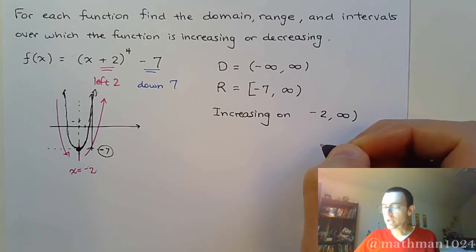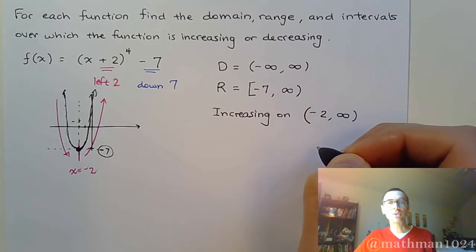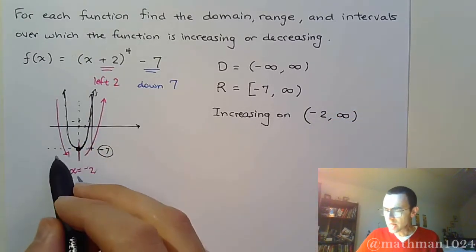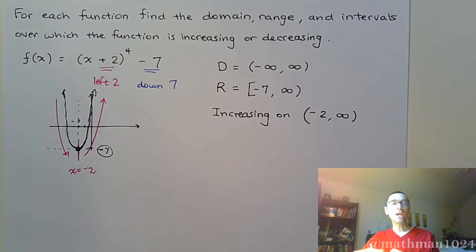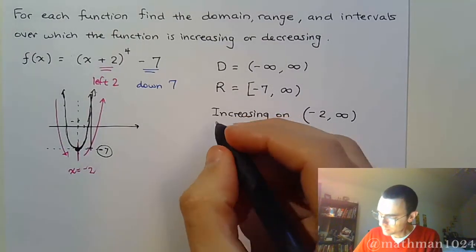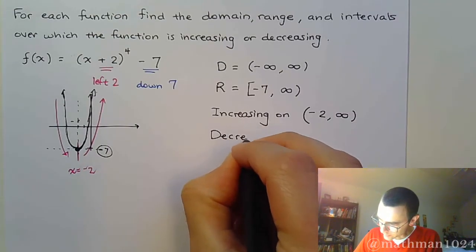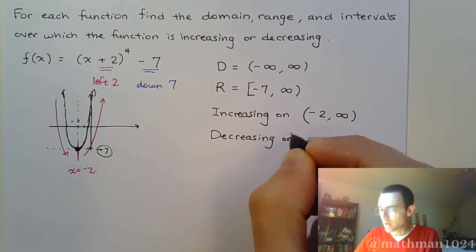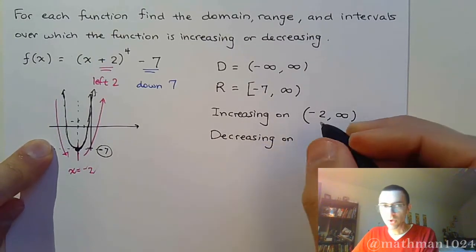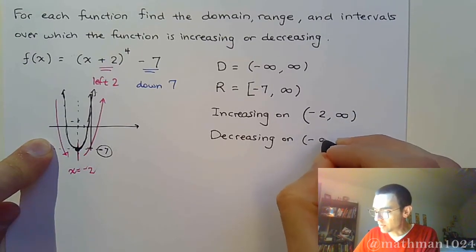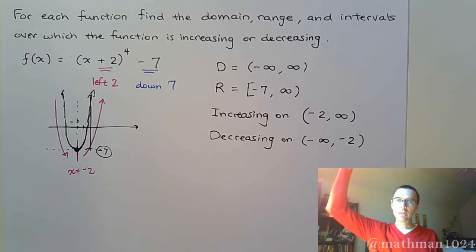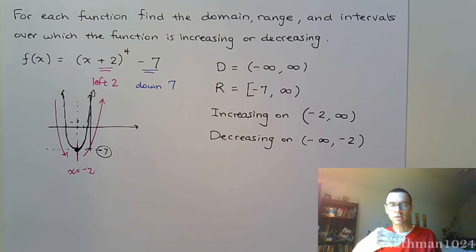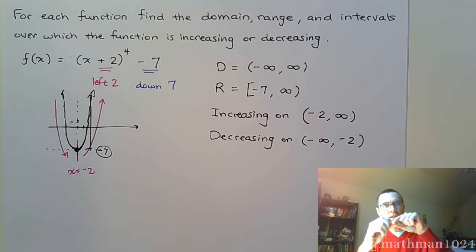Here's the thing you need to understand: when we talk about intervals over which we're increasing or decreasing, those are open intervals, so you have to have parentheses on both ends. Part of that is because right at x equals negative 2, you are neither increasing nor decreasing — that's where you're making the change from one to the other. And then where are we decreasing? We see that we are decreasing on the left side — as x goes from negative infinity up to negative 2. At negative 2 we're not going up or down. Beyond x equals negative 2 you're increasing the rest of the way.